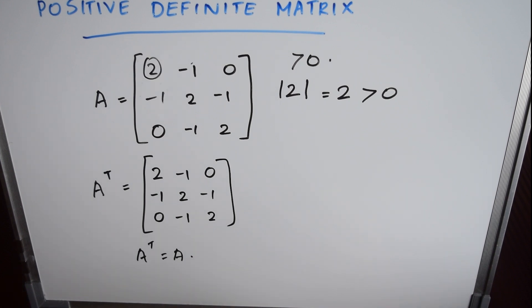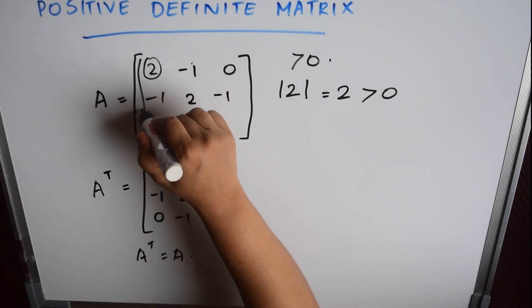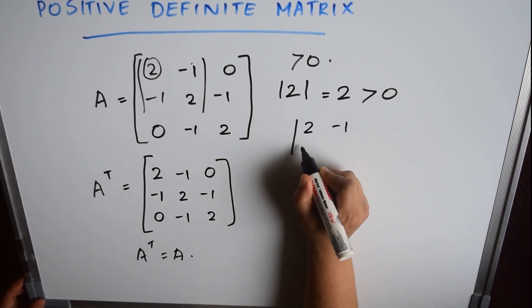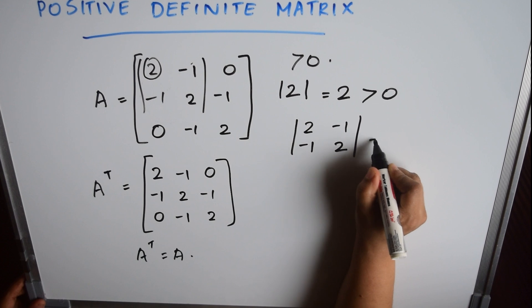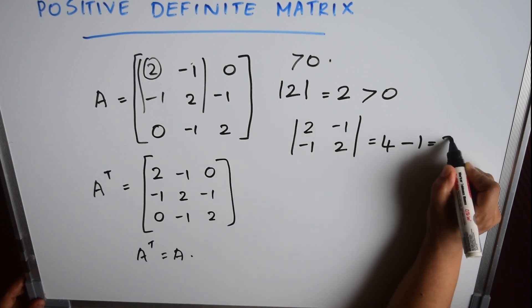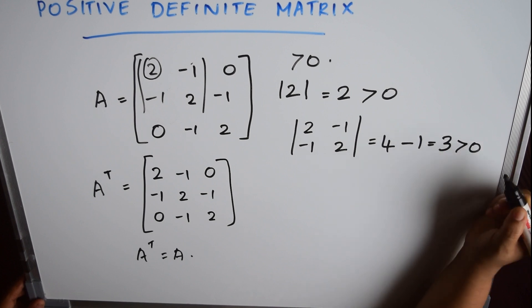Now consider the second upper left determinant of 2, -1, -1, 2, which is equal to 2 into 2, which equals 3. It is also greater than 0.